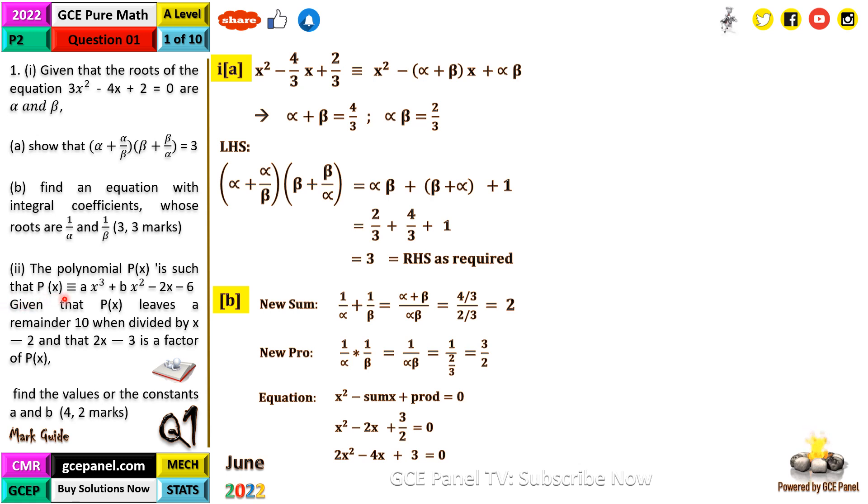Part C: The polynomial P(x) is such that P(x) = ax³ + bx² - 2x - 6. Given that P(x) leaves a remainder of 10 when divided by x - 2 and that 2x - 3 is a factor of P(x), find the values of the constants a and b.